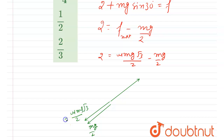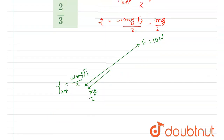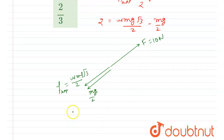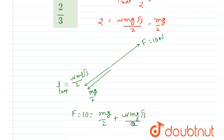Since we applied the maximum force of 10 newton, the maximum friction force will act. So writing the force equation along the plane: 10 = mg/2 + μmg·(√3/2). This is equation 2.